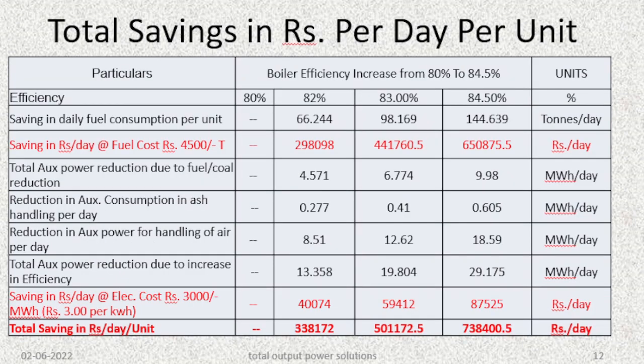Considering all these savings — daily fuel consumption savings, total auxiliary power reduction due to fuel reduction, reduction in ash handling auxiliary consumption, and reduction in auxiliary power for air handling — the total auxiliary power reduction due to the increase in boiler efficiency amounts to around 29.175 MWh per day. At an electricity cost of Rs. 3000 per MWh (Rs. 3 per kWh), this comes out to around Rs. 37,525 per day for the plant.